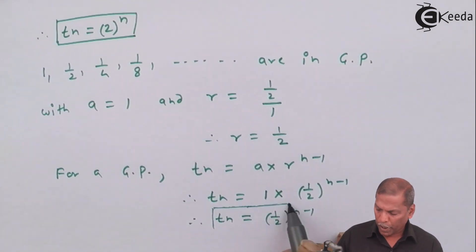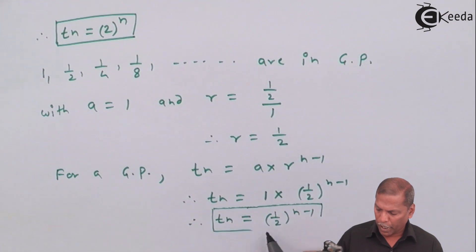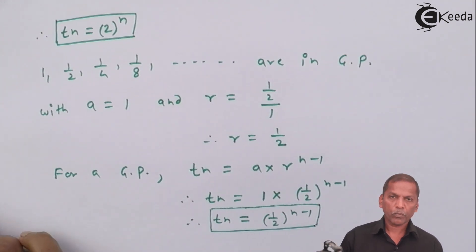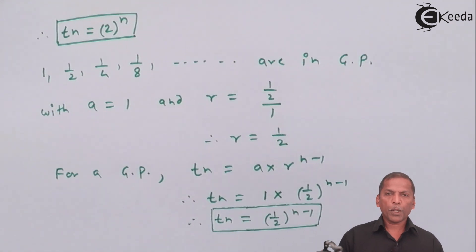So in this way, we get nth term of a GP. So this is all about nth term of geometric progression.